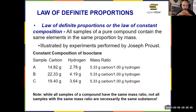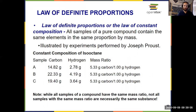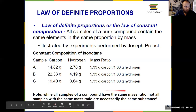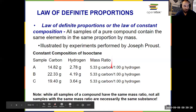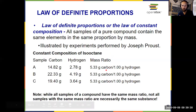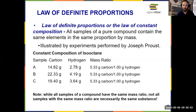We have the law of definite proportions, also known as the law of constant composition — two different names that mean the same thing. That tells us that all samples of a pure compound contain the same elements in the same proportion. We got that from Dalton's atomic theory, which was confirmed by later experiments from Joe Proust. A key thing: the inverse is not necessarily true — different things can have the same ratio but be different compounds. So just know that for a given pure compound, it always maintains the same constant composition throughout, the same definite proportion of those elements.